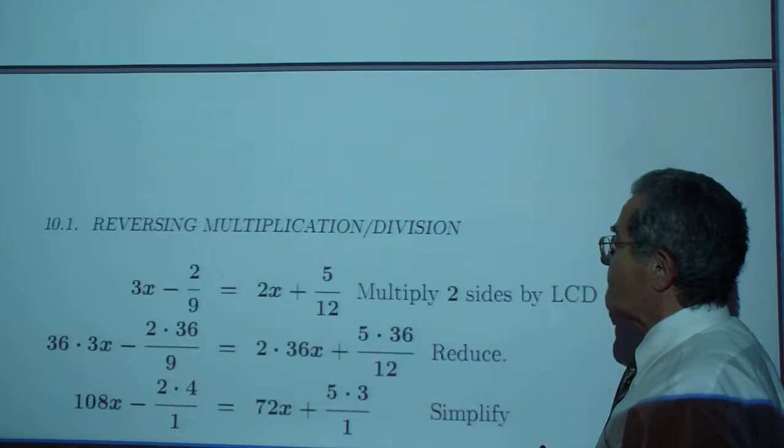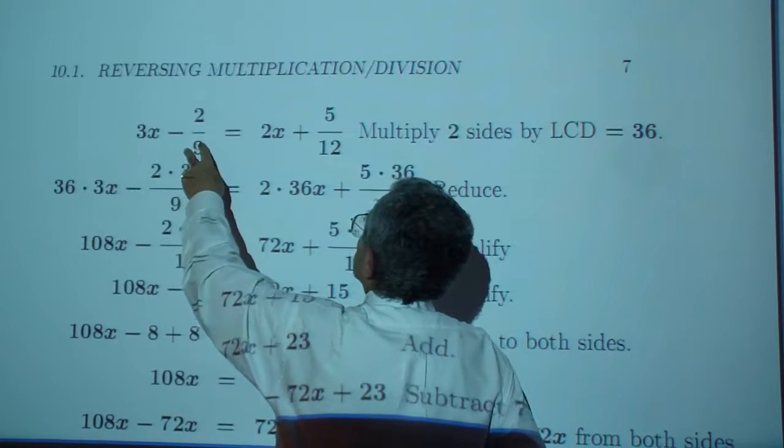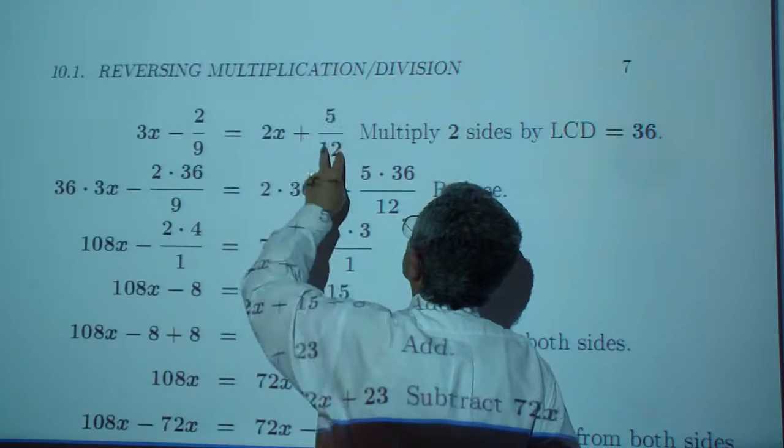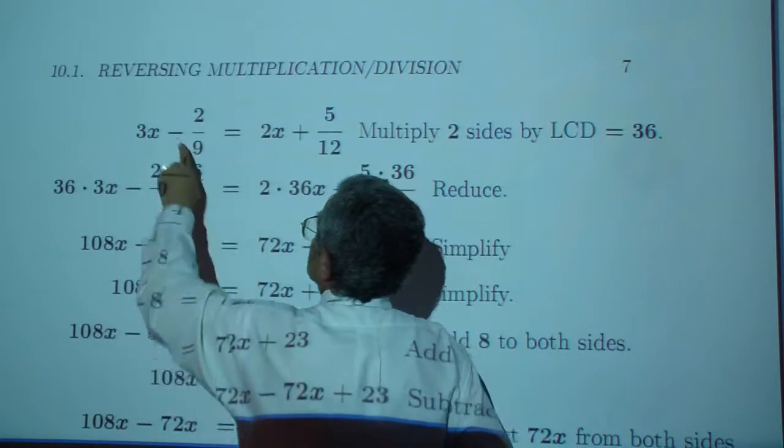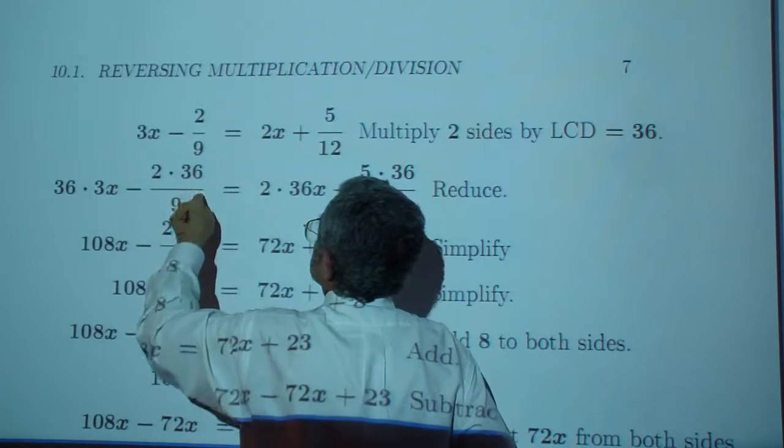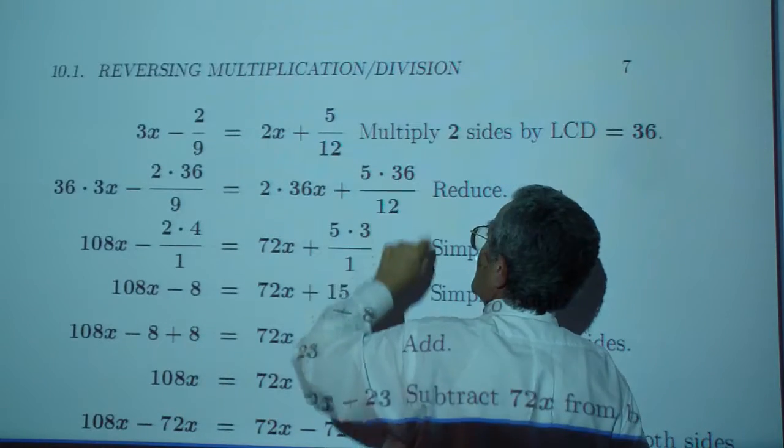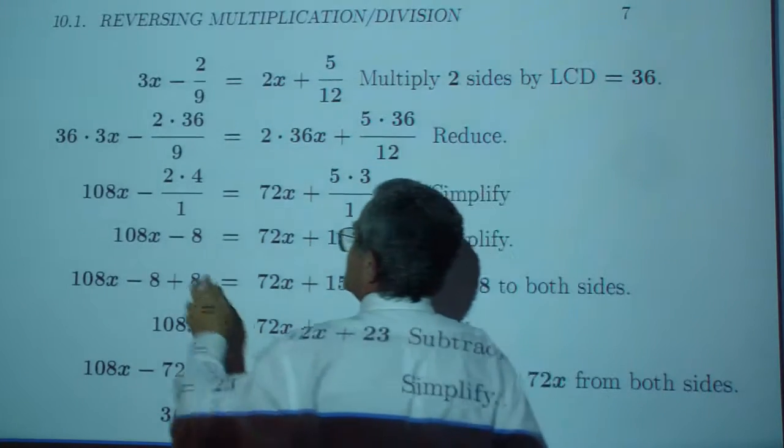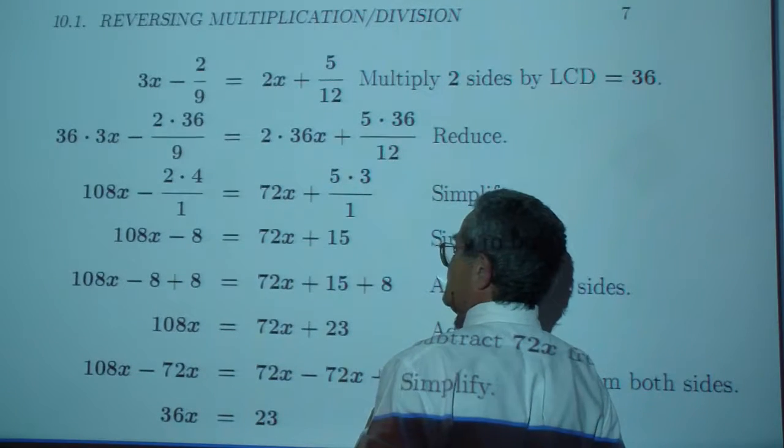How about this one? 3x minus 2 over 9 is equal to 2x plus 5 over 12. This common denominator 36. 3x times 36 minus 2 over 9 times 36. 2 times 36x. 5 over 12, 36.